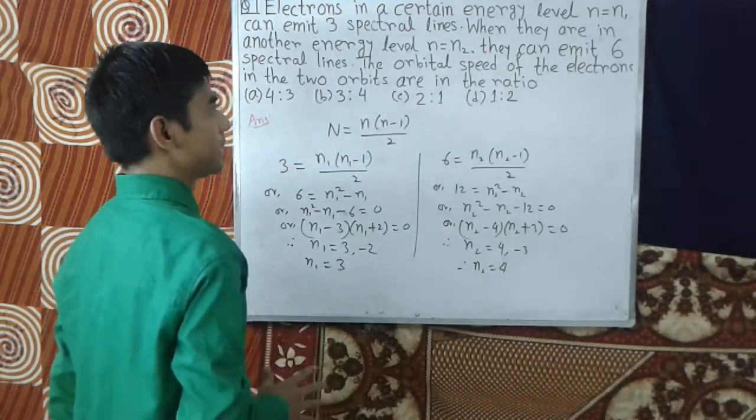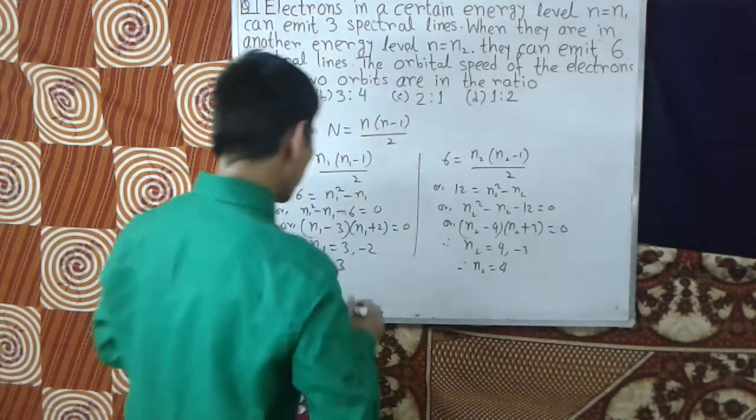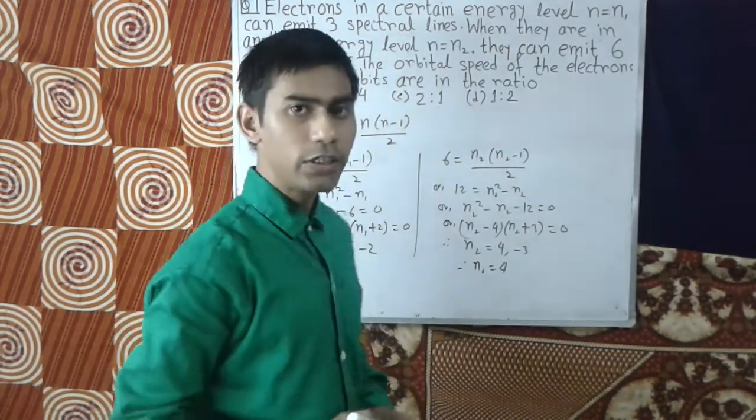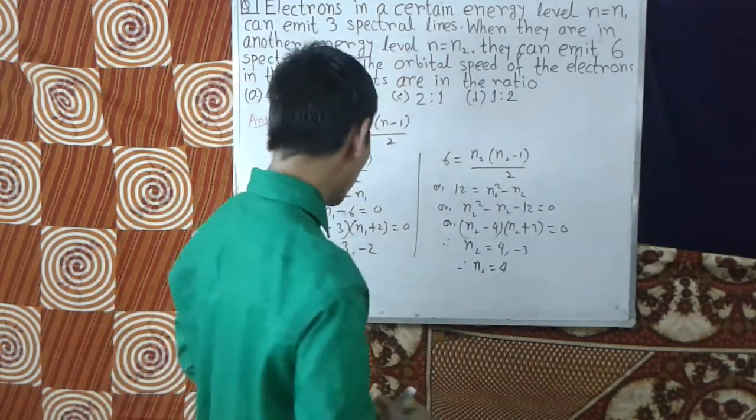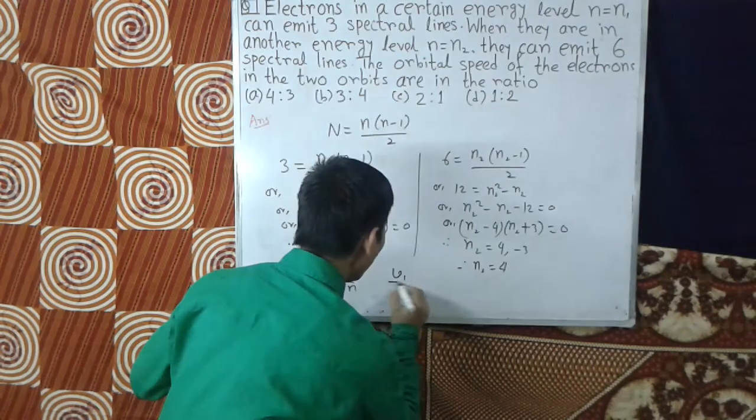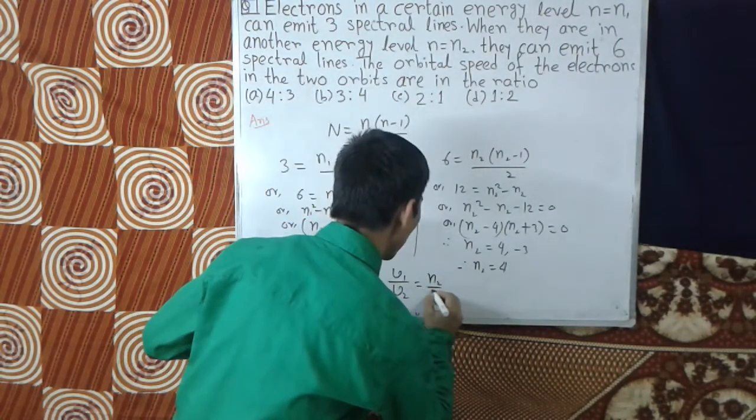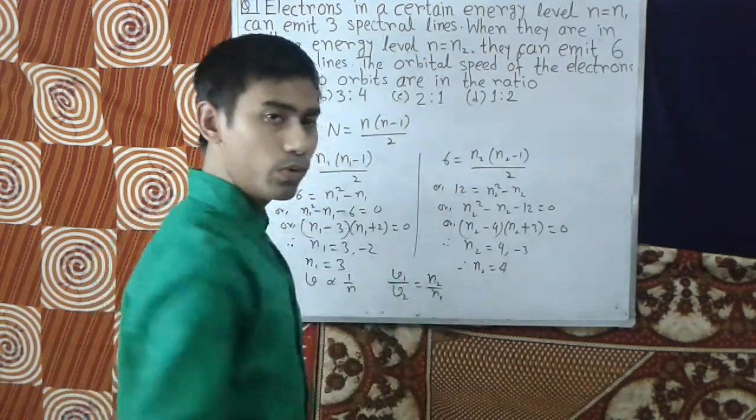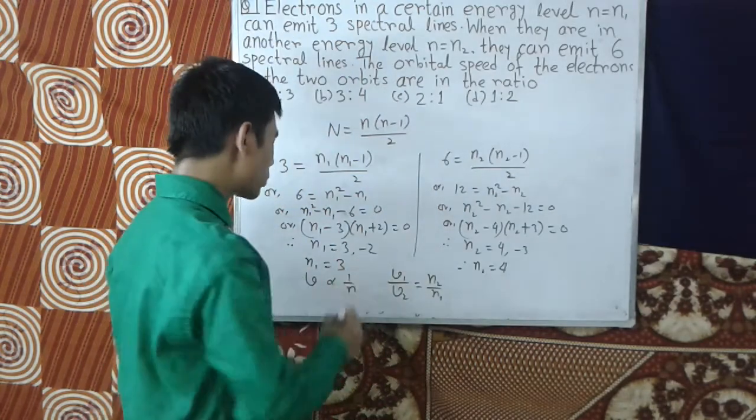Now we know that the velocity of electron is proportional to 1/n, where n is the principal quantum number. So v1/v2 = n2/n1. We determined that n2 = 4 and n1 = 3, so we put these values and get 4/3.